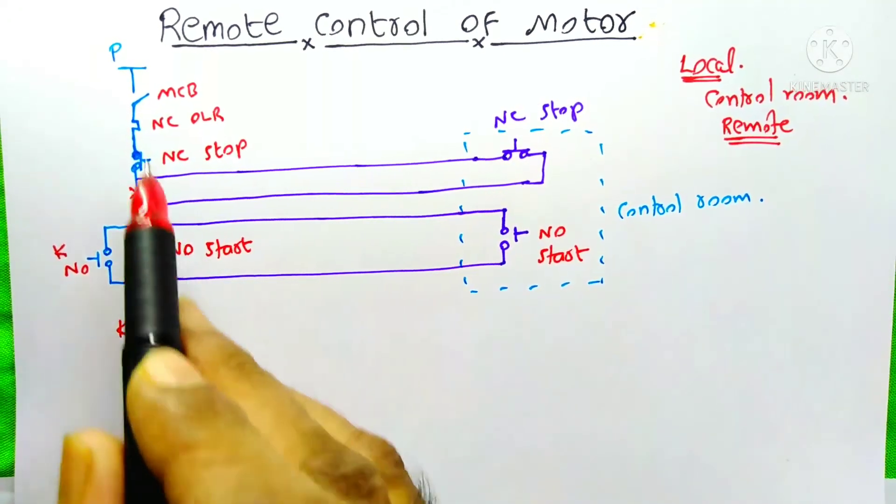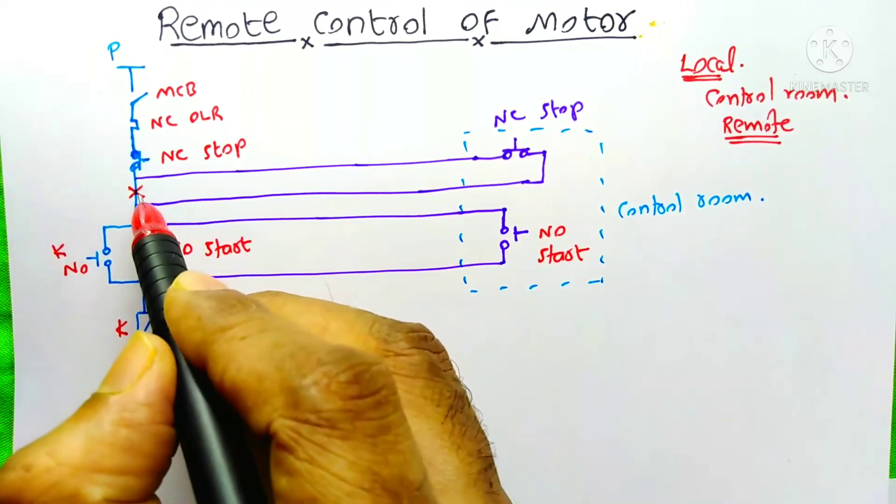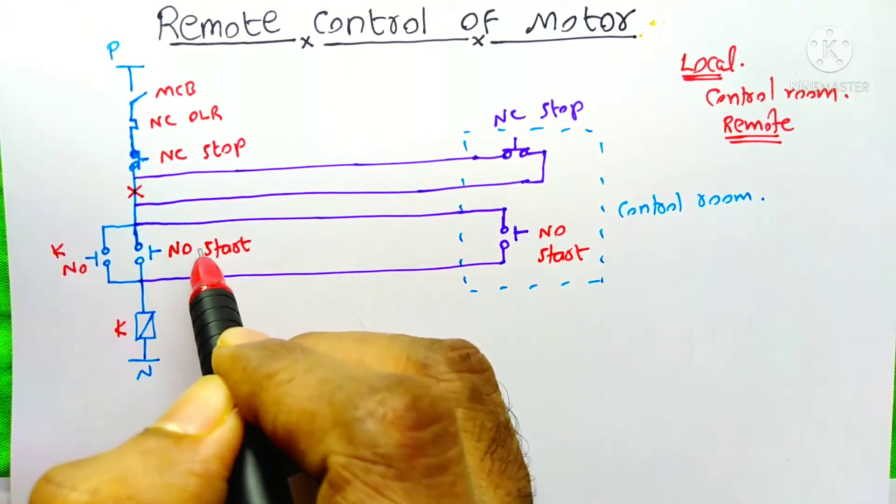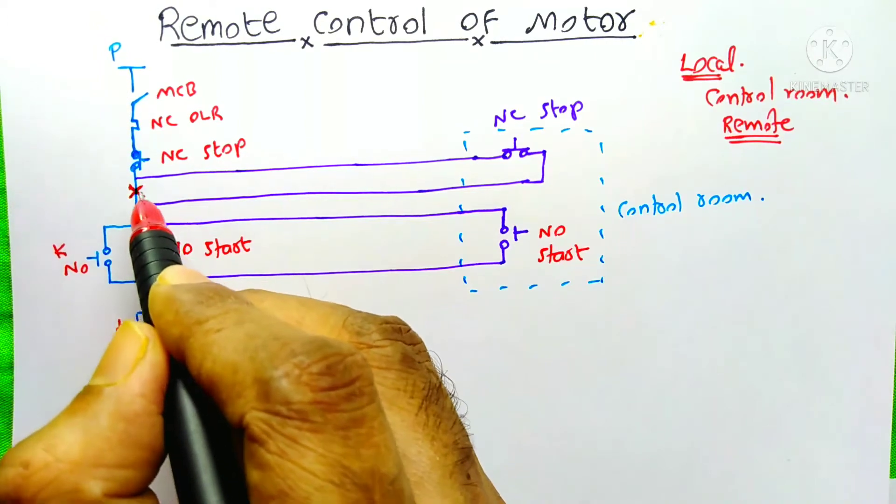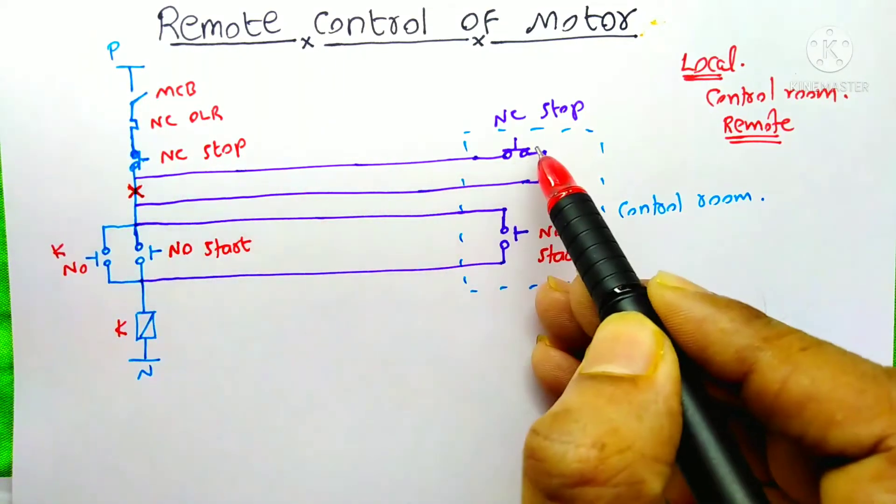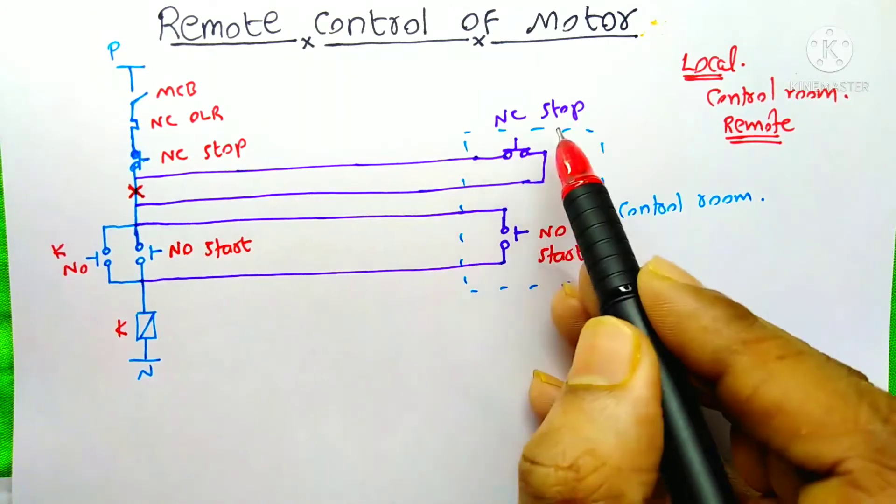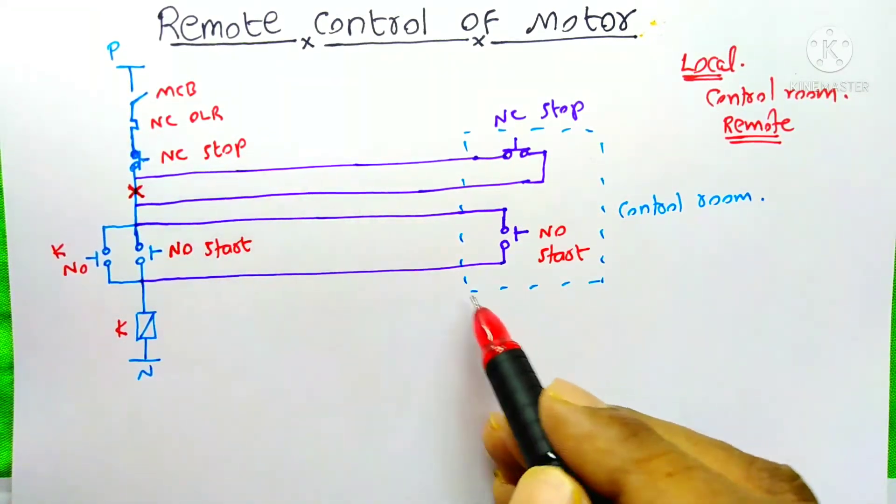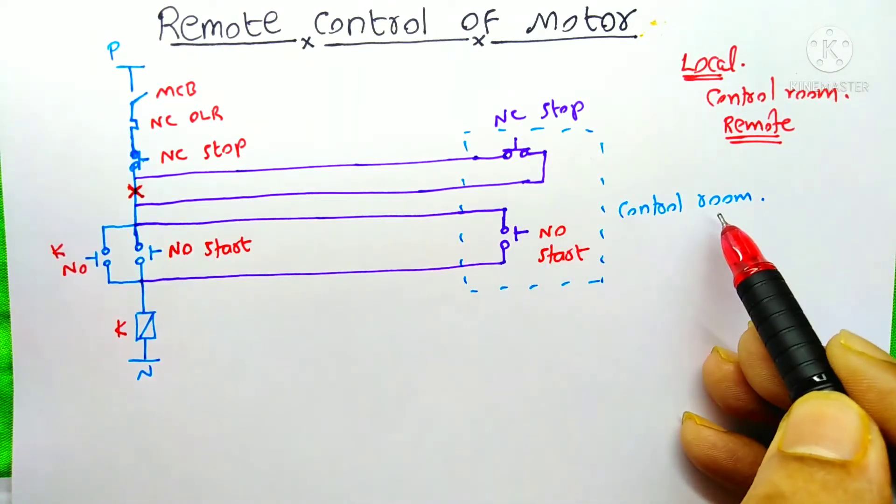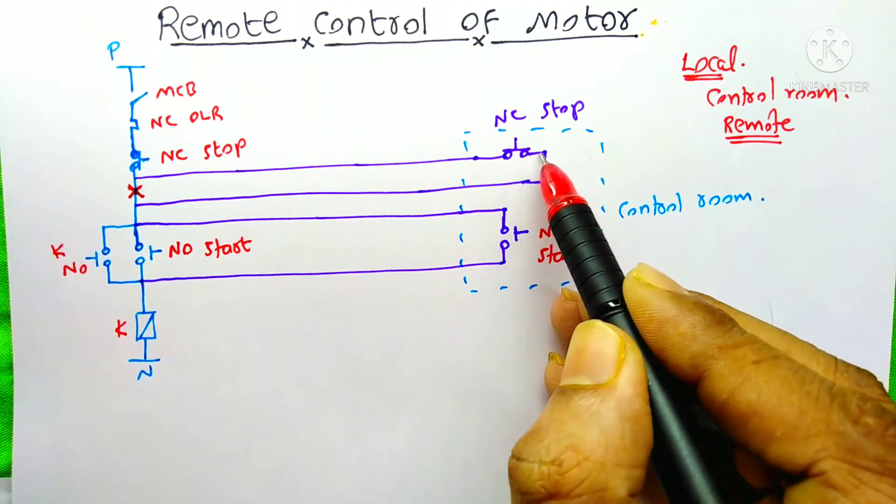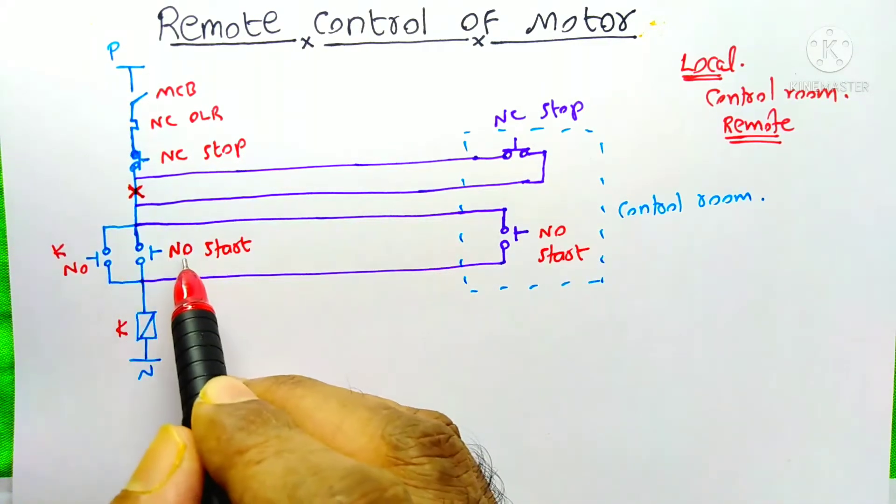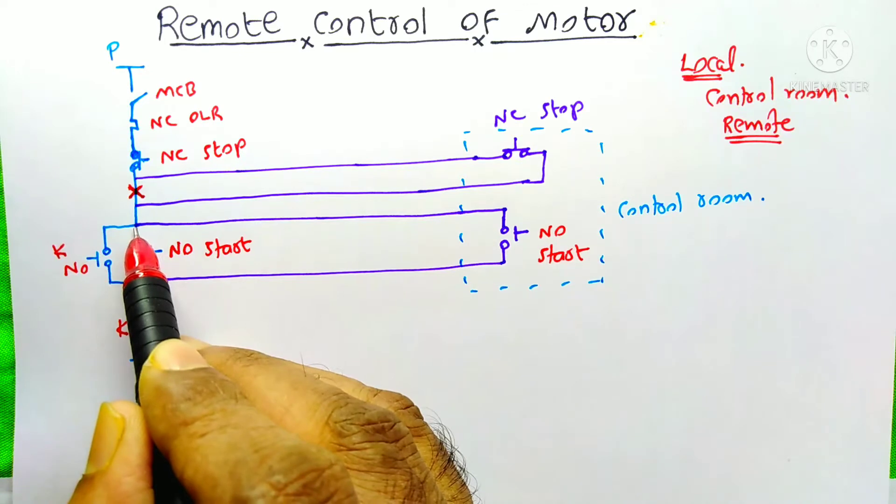Now I made some changes on this DOL starter. Here I just break the wire after this stop push button to the start push button. I just break over here. And then I connected a wire from here to this NC stop button. Stop push button is same as this stop push button. See, here this stop push button is located on the control room. After this stop push button, I just take another wire and just connect it to here. That means on the top terminal of this NO start push button.